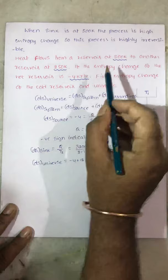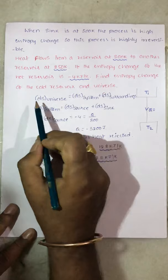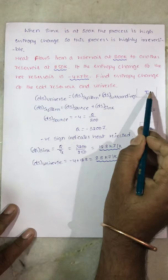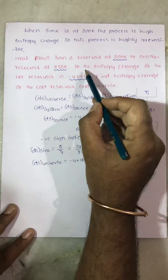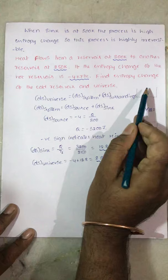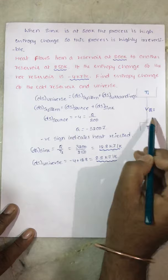Now let us look at the second problem. Heat flows from a reservoir at 800K to another reservoir at 250K. The entropy change of the hot reservoir is minus 4 kJ per Kelvin. Find the entropy change of the cold reservoir and the universe. DS of surroundings is zero, as heat flows from one part of the system to another — not to the surroundings.